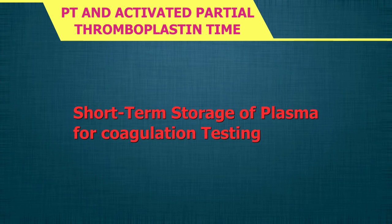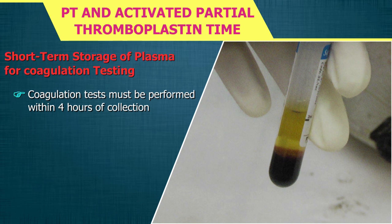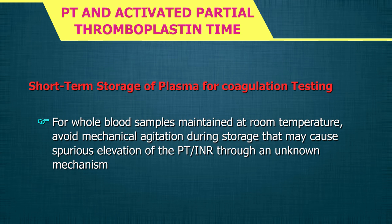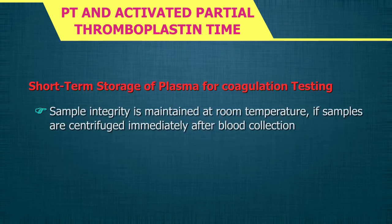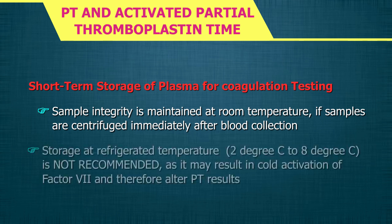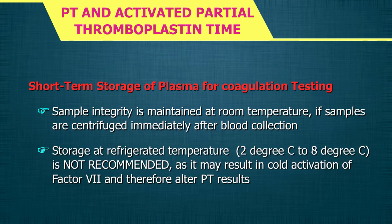Coagulation tests must be performed within 4 hours of collection. If a longer delay is expected, plasma should be made platelet-free and kept frozen: at −20°C for up to 1 week, and at −80°C for up to 1 year. For whole blood samples maintained at room temperature, avoid mechanical agitation during storage, as that may cause spurious elevation of PT or INR. Storage at refrigerated temperature (2–8°C) is not recommended, as it may result in cold activation of factor 7 and alter PT results.